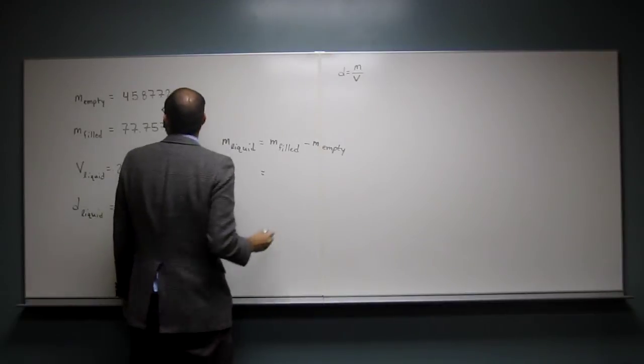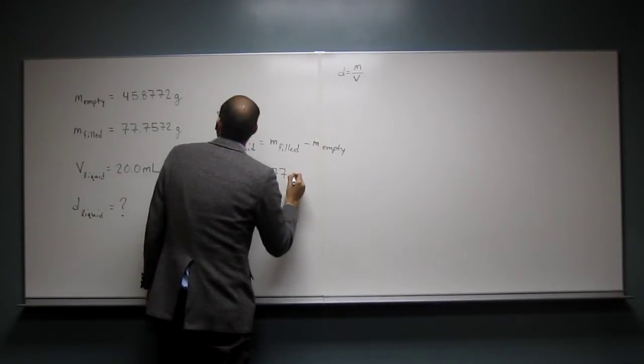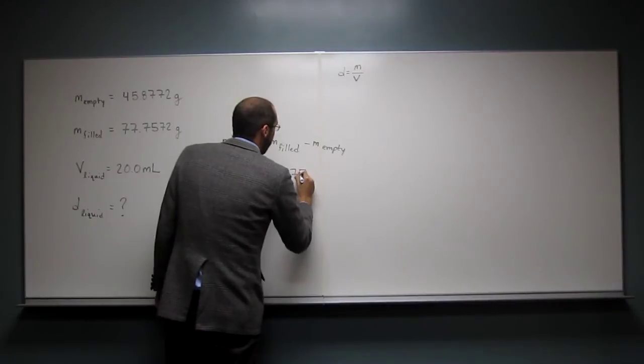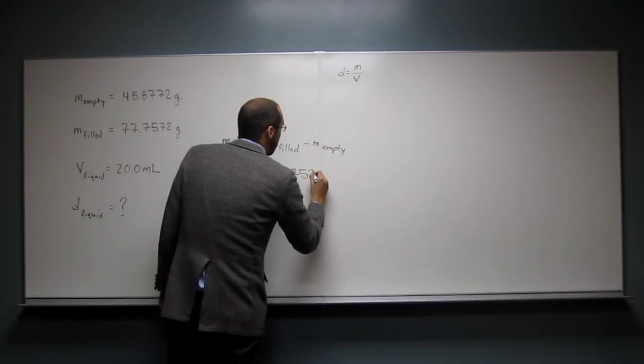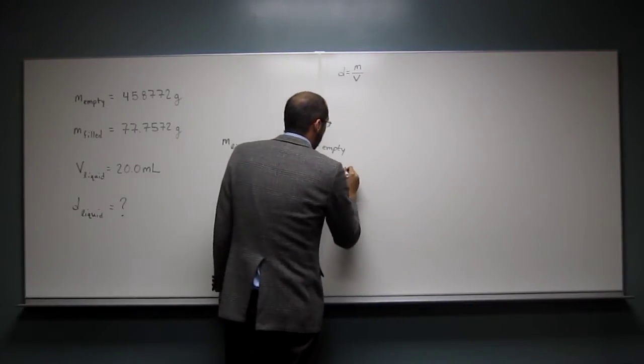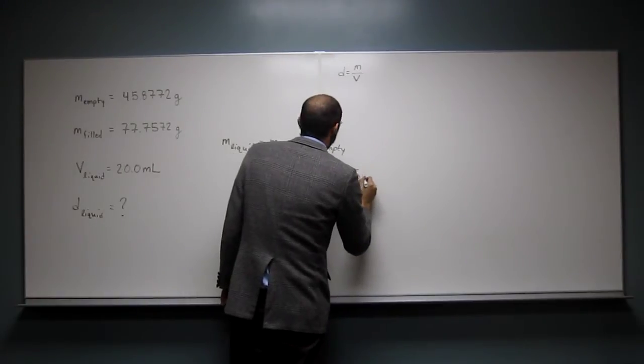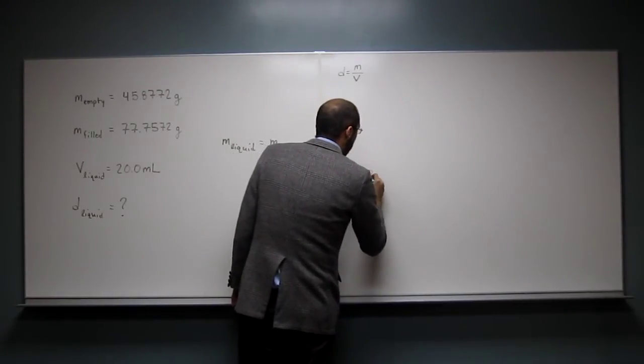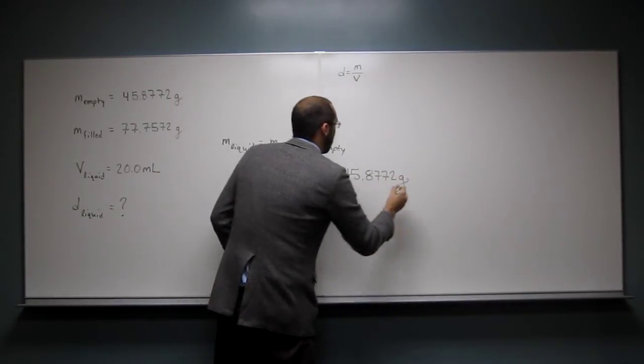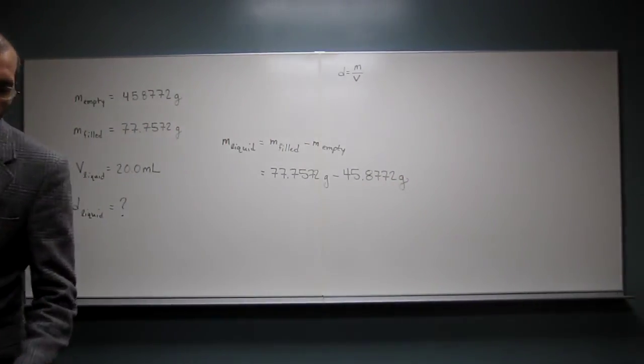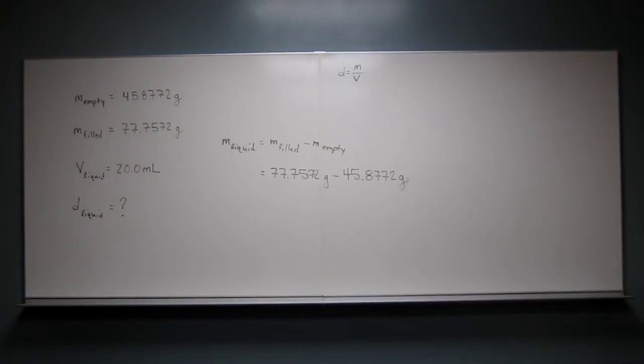So all we've got to do is take 77.7572 grams, subtract 45.8772 grams from it. Okay. Pens we're running out of ink of course. So, 77.7572, 45.8772.